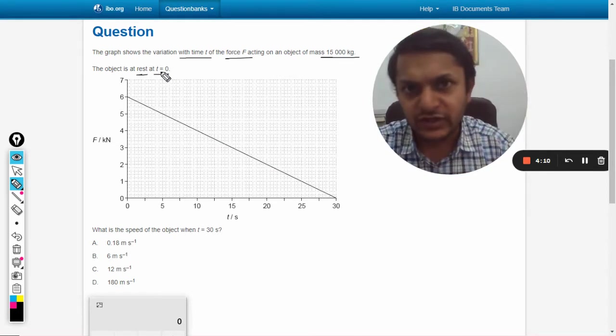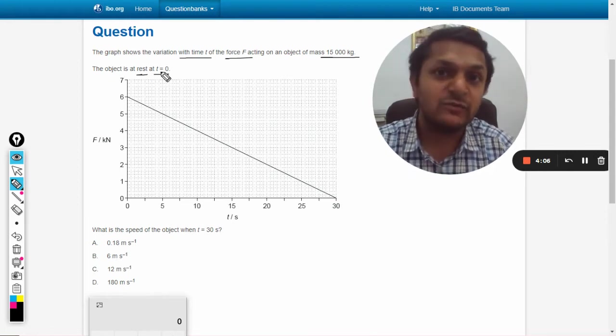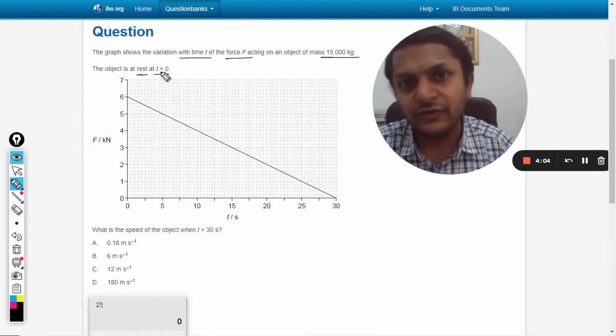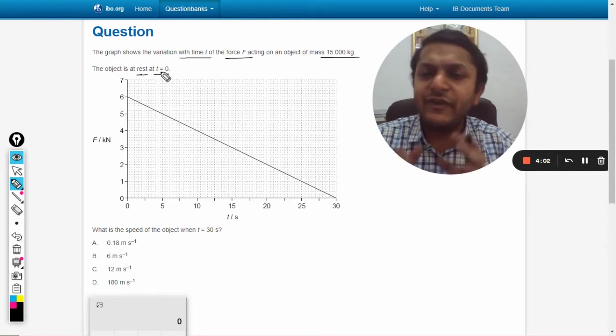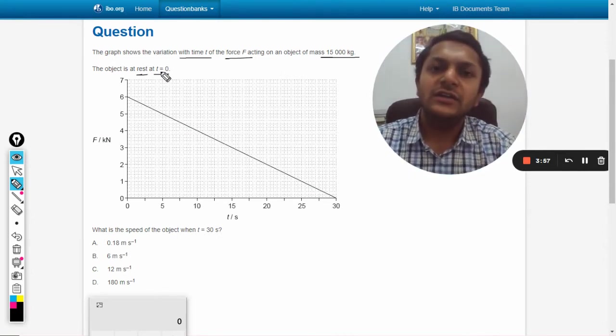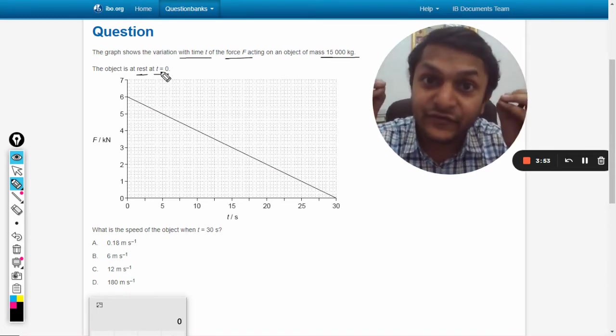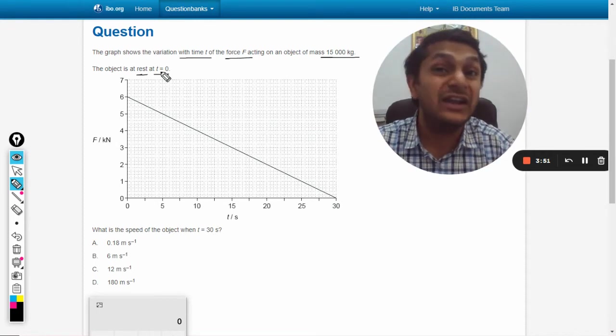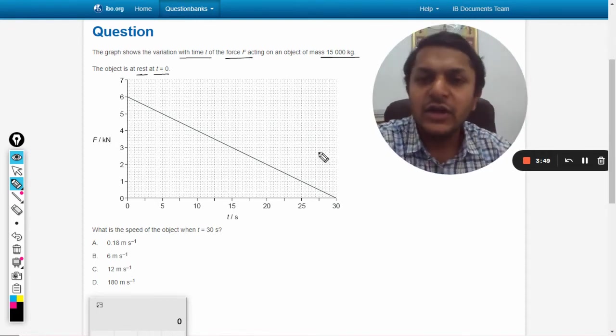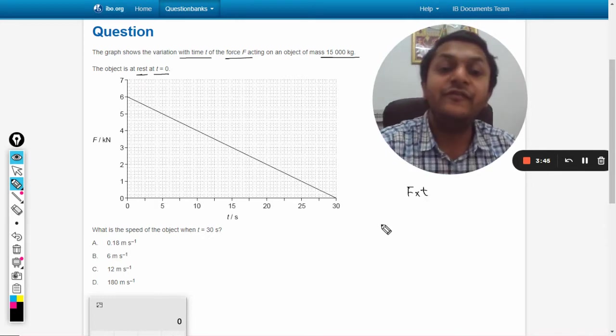The problem here is on the x-axis we don't have displacement, we have time instead. But whenever we have a graph, always take it as a clue - try to find the area and the units of the area to determine what physical quantity is being represented. In this case, it will be force multiplied by time. Where have we studied that? We have studied that in the topic named impulse.